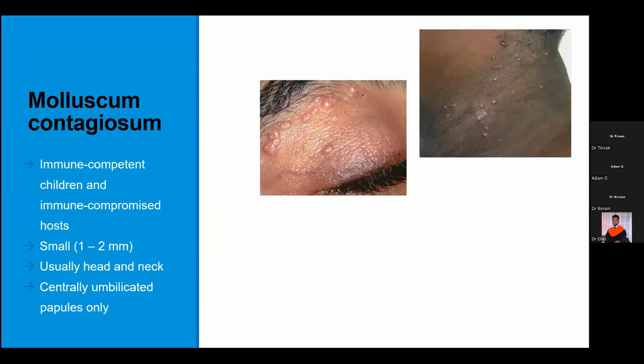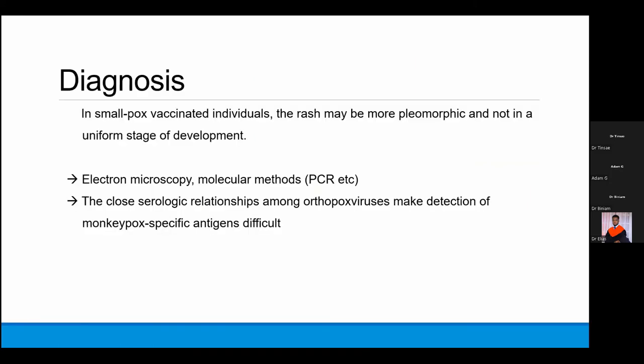Molluscum contagiosum is another commonly diagnosed pox virus. It is usually seen in immunocompetent children and also immunocompromised people across all ages. The lesions are very small — one to two millimeters — centrally umbilicated, only papular, and usually affect the head and neck. This makes it easier to differentiate from monkeypox. In older patients previously vaccinated against smallpox, monkeypox may present with an atypical rash distribution. Diagnosis is by electron microscopy and molecular methods such as PCR. Serologic tests are not very useful due to cross-reactivity with other members.